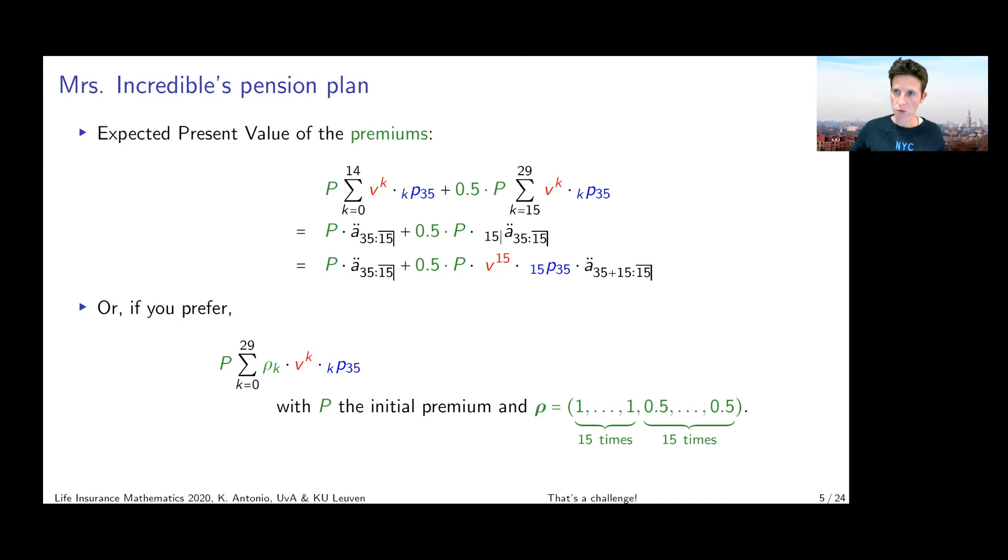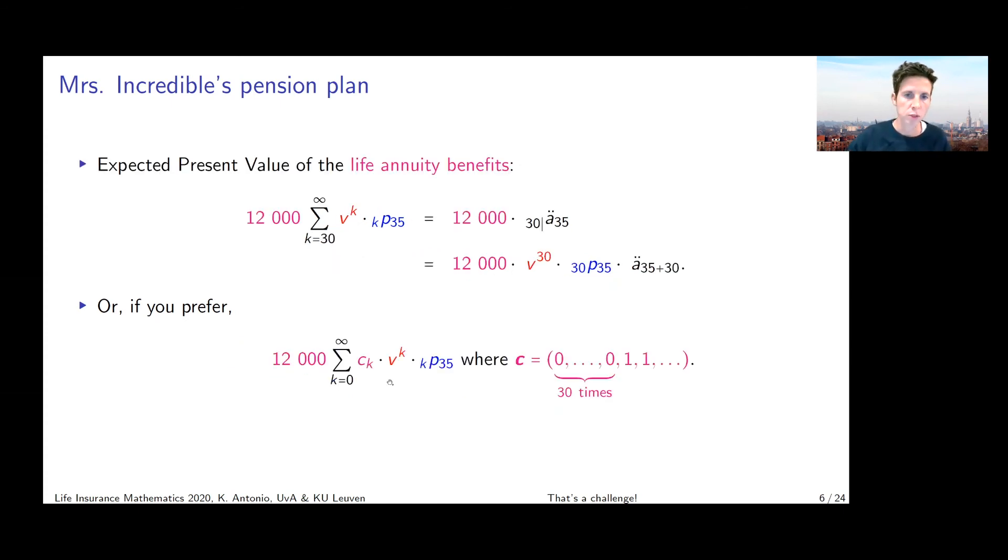And in the last equality, I'm using my knowledge of the EPV of a deferred life annuity. There I can say that is V to the power 15 multiplied with the 15 year survival probability of a 35 year old. And then I've got the EPV of a 15 year term annuity issued to a 50 year old. So that's different ways to write the same thing.